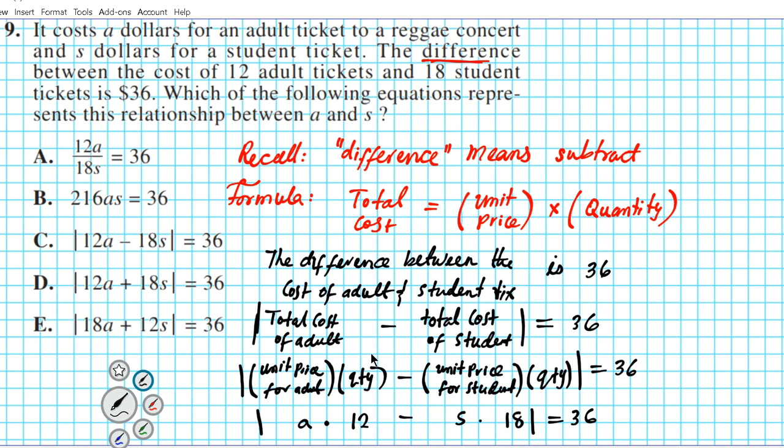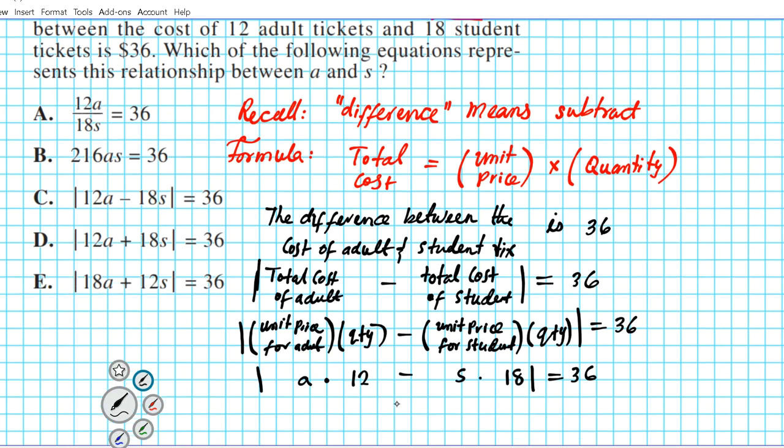Let's go ahead and write our answer in standard notation. So for this problem the answer is, you put the coefficients first. So 12a minus 18s is equal to 36. So the answer is option letter C.